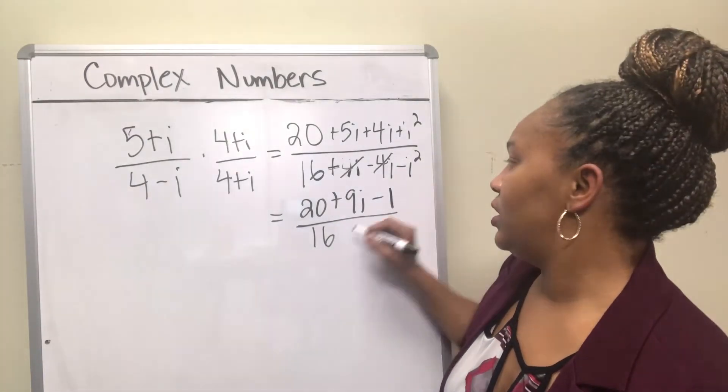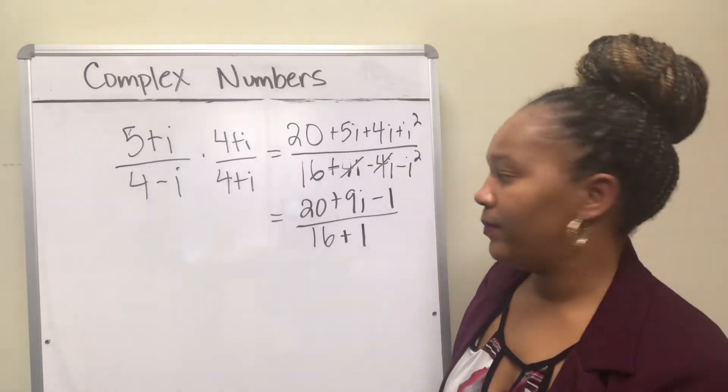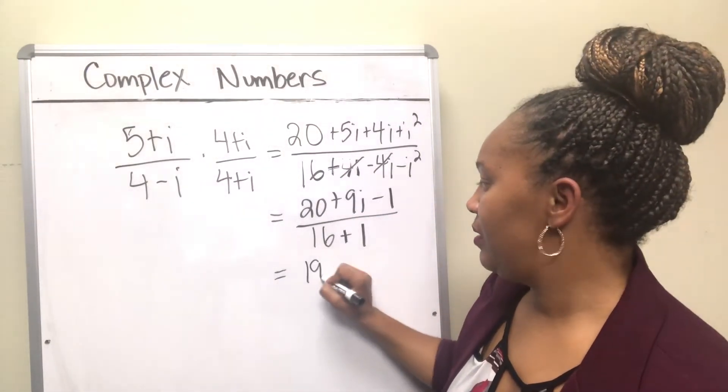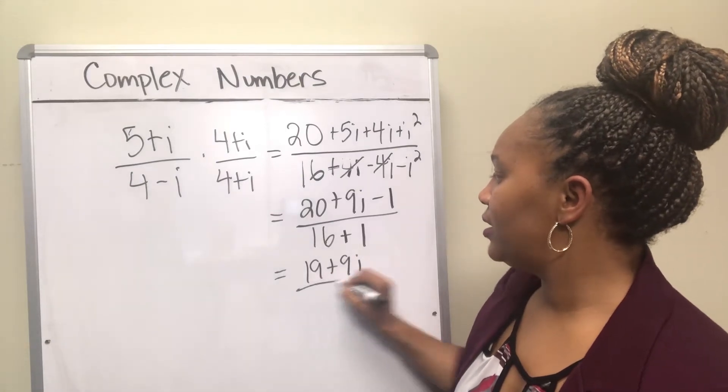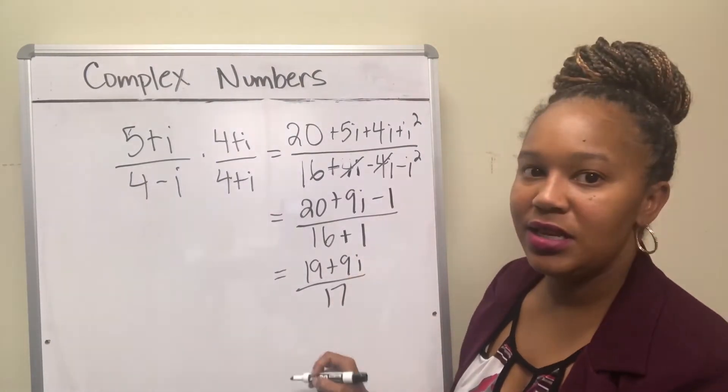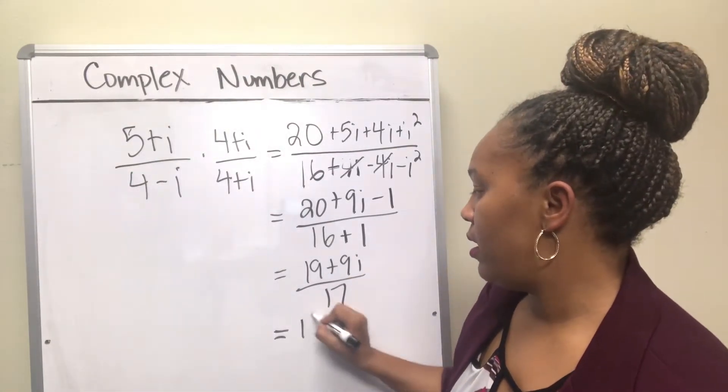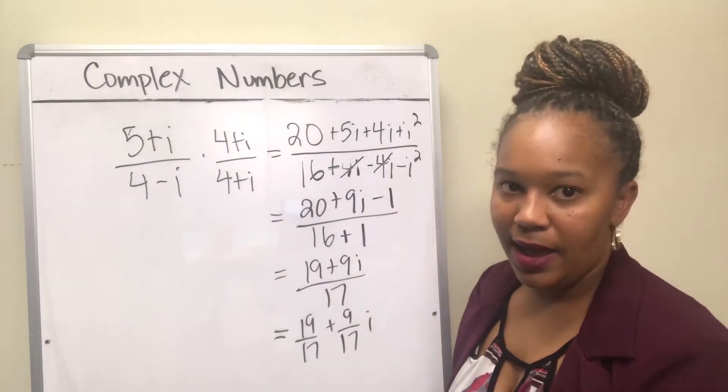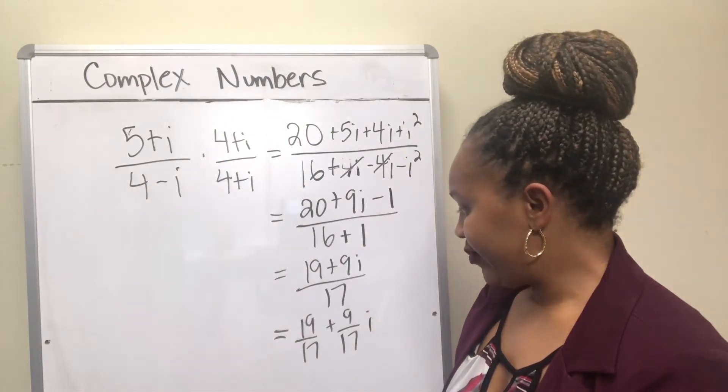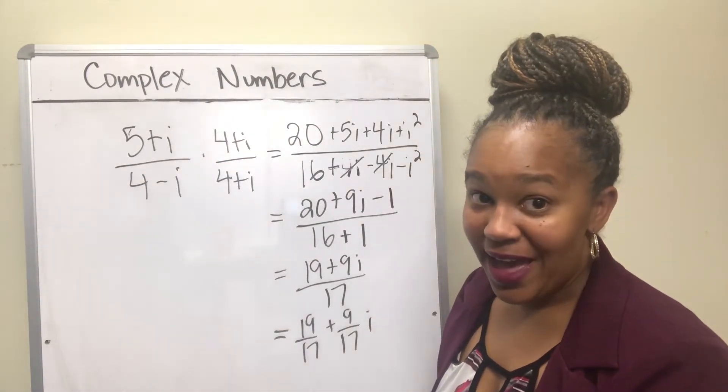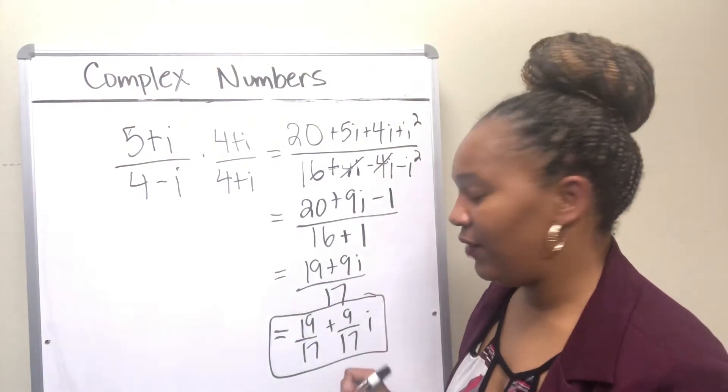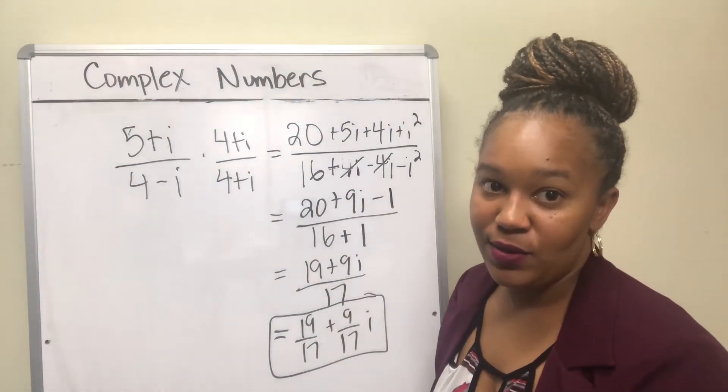20 minus 1 is 19 plus 9i. 16 plus 1 is 17. Break that apart: 19 over 17 plus 9 over 17 i. So that is your final answer.